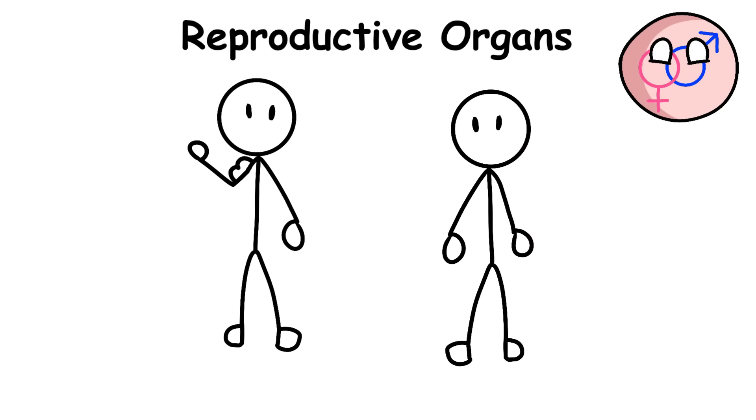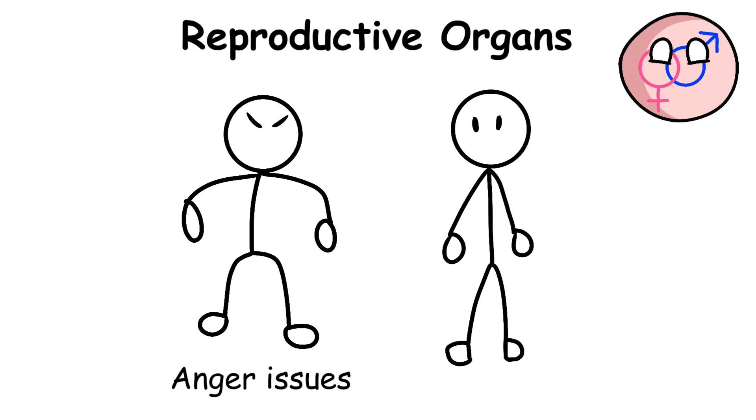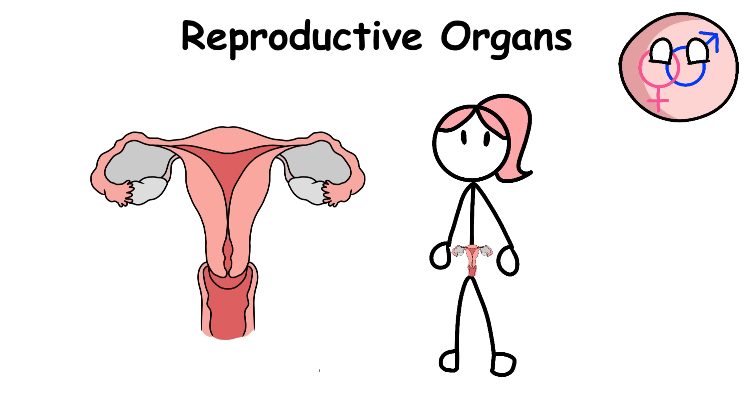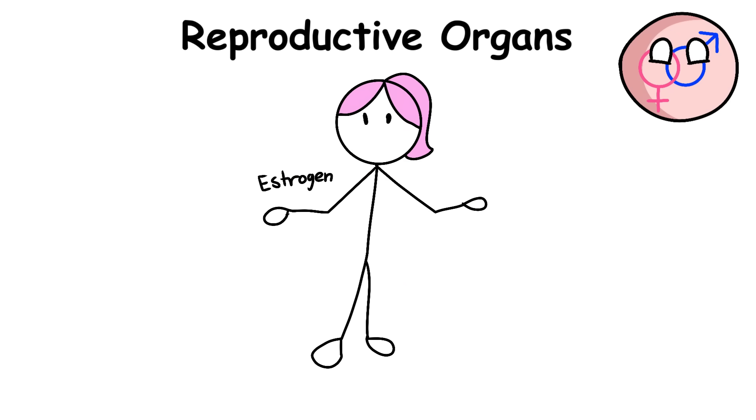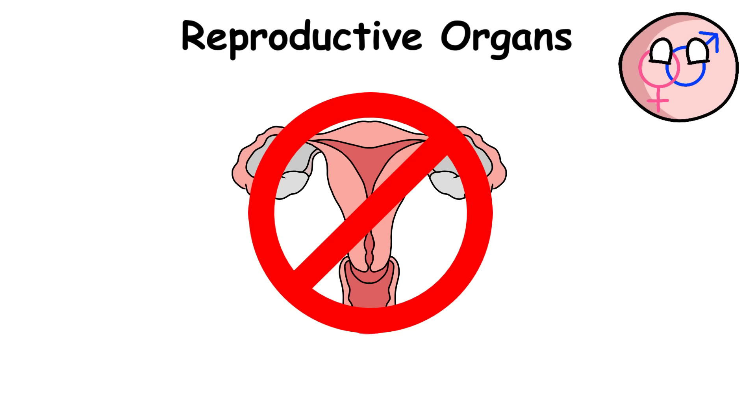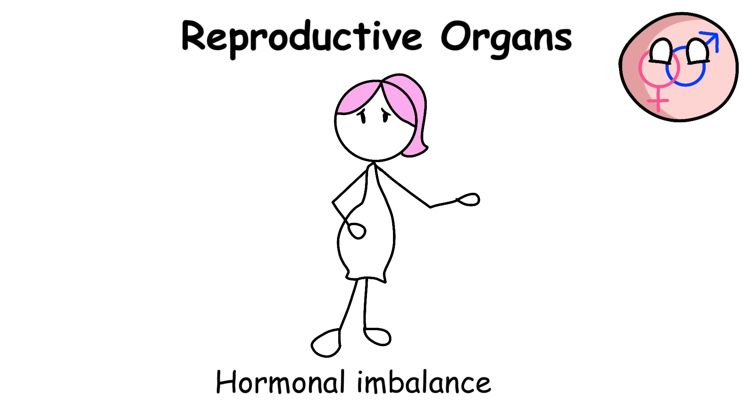Meanwhile, the ovaries are found on either side of the female's uterus. The main role of the ovaries is to produce eggs for fertilization and the hormones estrogen and progesterone. Without the ovaries, the female body cannot get pregnant and will experience hormonal imbalance.